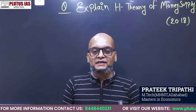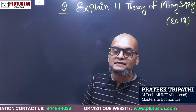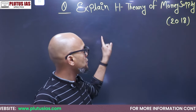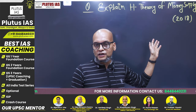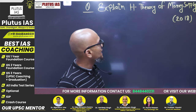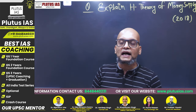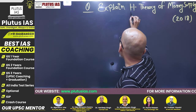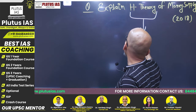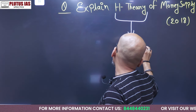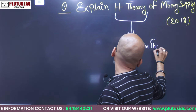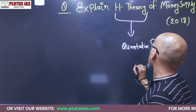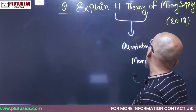Hello everyone, a very good afternoon. Welcome to Plutus IAS. Today we are going to solve a past year question of economics optional — this question has actually come two or three times in our optional paper. The question is: explain the H theory of money supply. This theory is also known as the quantitative theory of money supply, or the monetarist theory.